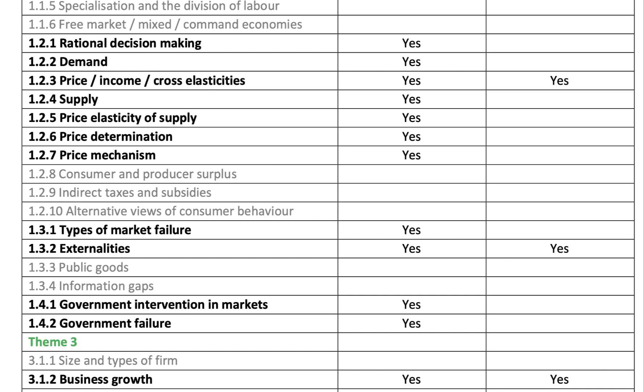They've taken out indirect taxes and subsidies as a specific topic area. But of course they've included government intervention in markets, which includes indirect taxes and subsidies as well as things like minimum and maximum prices. I would strongly advise students to revise indirect taxes and subsidies because that is a form of intervention in markets.